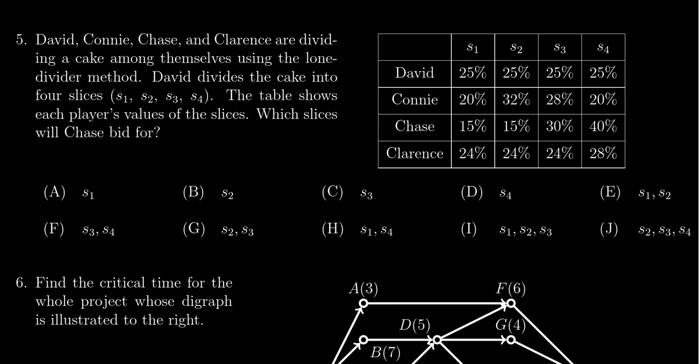David, Connie, Chase, and Clarence are dividing a cake amongst themselves using the lone divider method. There's only one divider, and you can guess it—it's David.